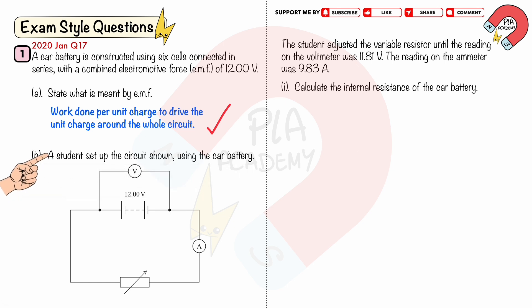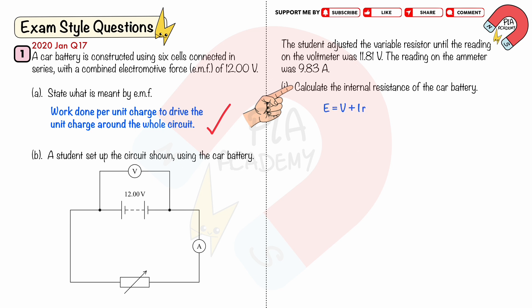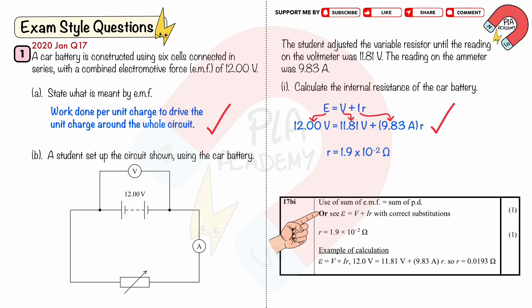Part B. A student set up the circuit shown using the car battery. The student adjusted the variable resistor until the reading on the voltmeter was 11.81 volts and the reading on the ammeter was 9.83 amperes. Part B1: Calculate the internal resistance of the car battery. Using E equals V plus Ir, substituting E as 12 volts, V as 11.81 volts, and I as 9.83 amperes, we get the internal resistance as 1.9 × 10⁻² ohms (to two significant figures). You will get two marks for use of E equals V plus Ir and the correct internal resistance of 1.9 × 10⁻² ohms.